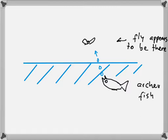Now let's look at a similar but reversed situation — the archer fish. This is an actual species that hunts by shooting water at flying insects above the surface. The water hits the insect, the insect falls onto the surface, and the archer fish eats it. From the archer fish's point of view, the fish sees the image of a fly located at a certain distance above the water.